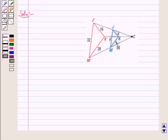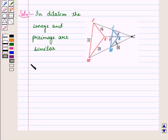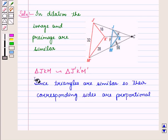Now since these two triangles are similar, so their corresponding sides are proportional.